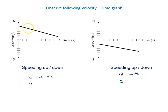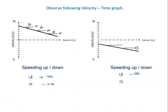Acceleration is constant from this velocity-time graph. If I draw the x-axis, this angle theta is constant, but theta is obtuse. When theta is obtuse, tan(theta) is negative, so acceleration is negative. In the second situation also, we draw the x-axis and see the angle theta — it is constant, meaning acceleration is constant, but theta is obtuse, so tan(theta) is negative and acceleration is negative.